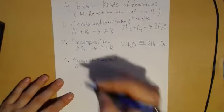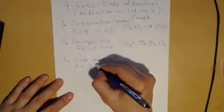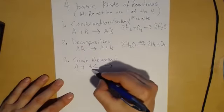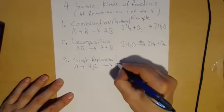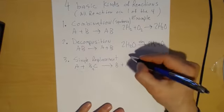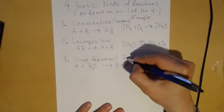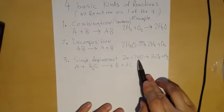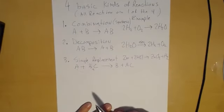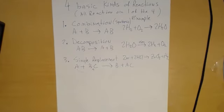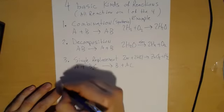In a single replacement, one component reacts with something that has two components, and one component leaves while the other joins. A really good example is a metal reacting with an acid: zinc reacts with two hydrochloric acid to make zinc chloride and hydrogen gas. The hydrogen is bumped out and the zinc joins with the chlorine. That's a single replacement.